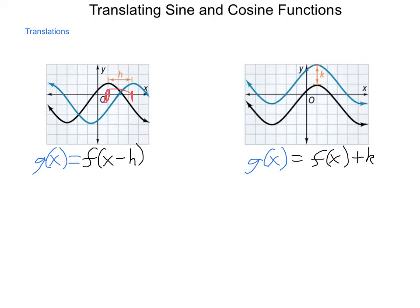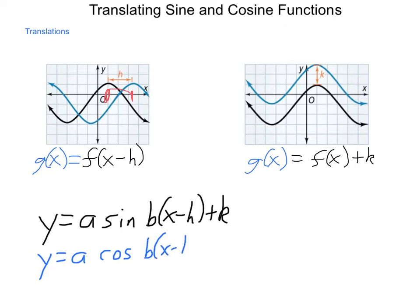So our parent functions that we have when we're dealing in trigonometry is y equals a sine of b times x minus h plus k, as well as y equals a cosine of b times x minus h plus k. And these are the full versions of our transformed functions. We've dealt with the a and b so far. Now we're going to be looking at h and k.